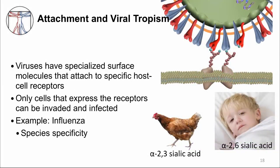Attachment is not just important for bacteria. For viruses, it often determines which cells they can invade. Viral infection of specific cell types is called viral tropism. This is often determined by the specific attachment of viral surface molecules to host cell receptors. Only cells that express the receptors can be infected. An important example of this is influenza, a virus that infects our airway epithelial cells by binding to sialic acid residues on glycosylated membrane proteins. You can see the attachment of the blue structure, which is the viral surface molecule, to the blue sphere, which represents sialic acid residues.